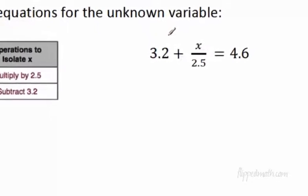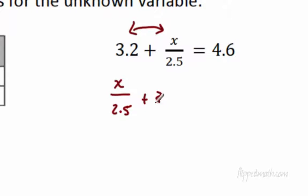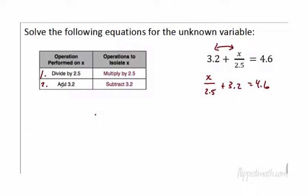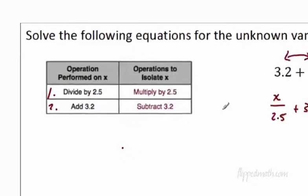The next example is pretty close to the other one, except here we have 3.2 in front. Since the order we add doesn't matter — commutative property of addition — I'm going to rewrite this equation as x divided by 2.5 plus 3.2, all of that equals 4.6. The table tells us: first we divided by 2.5, then we added 3.2. The opposite steps to isolate x: subtract 3.2 first, then multiply by 2.5.